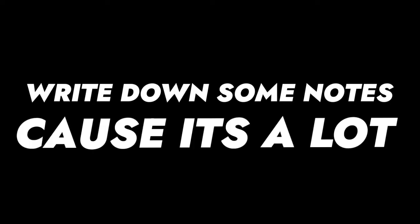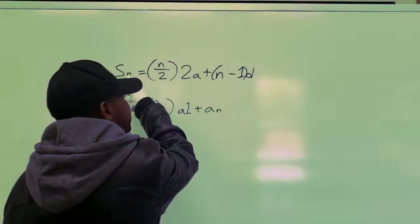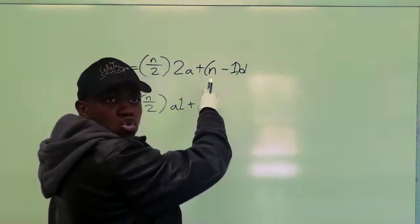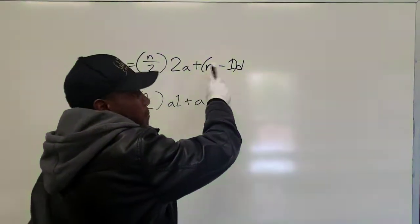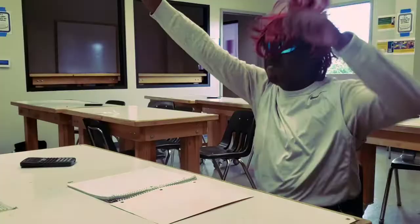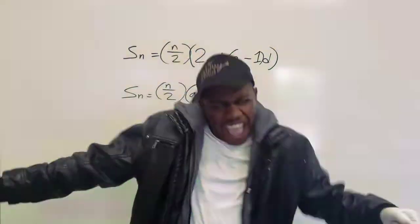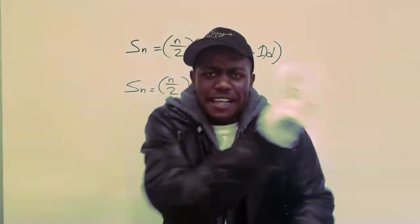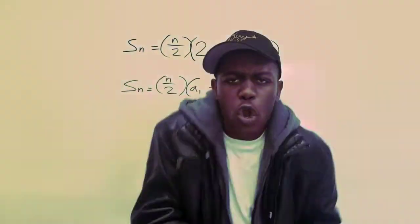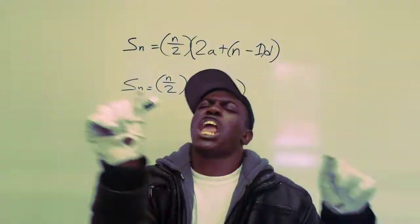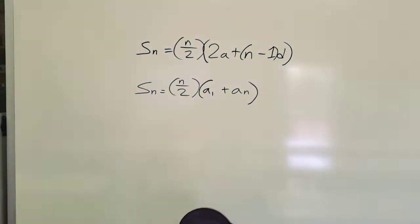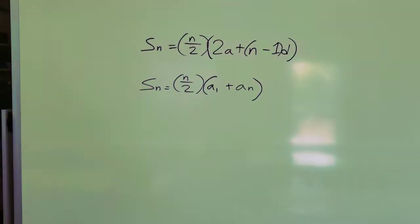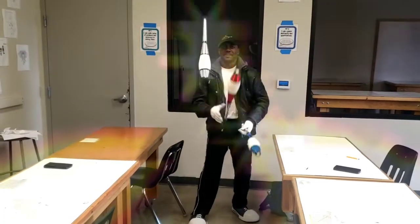Write down some notes because there's a lot. Sₙ equals n over two times (2a plus (n minus one) d). Also, Sₙ equals n over two times (a₁ plus aₙ). Sₙ is the sum of n terms, and aₙ is the last term of the arithmetic sequence.